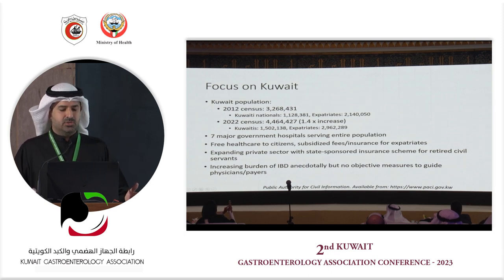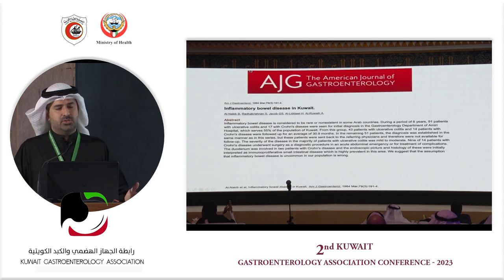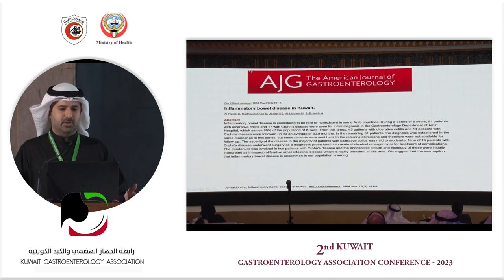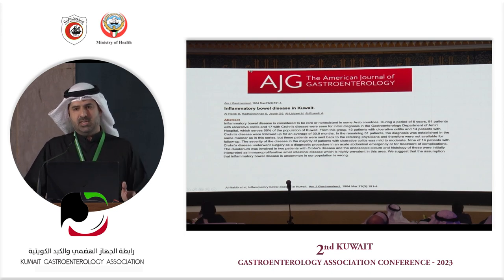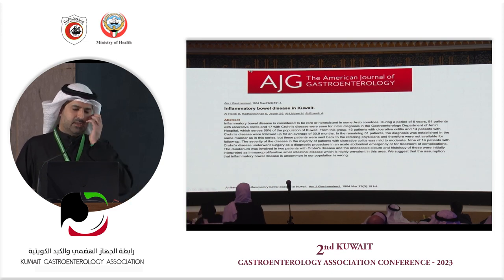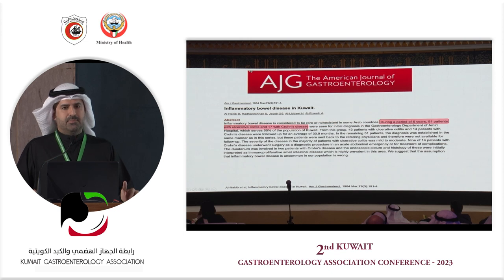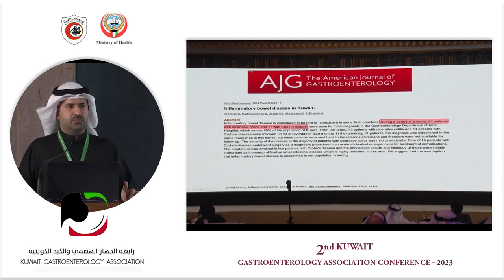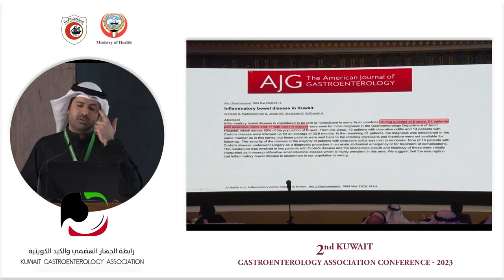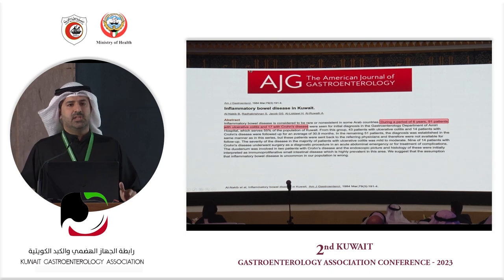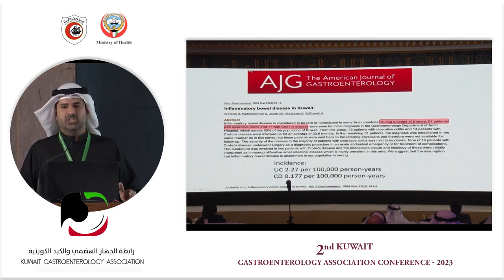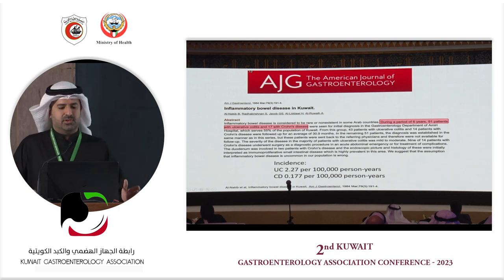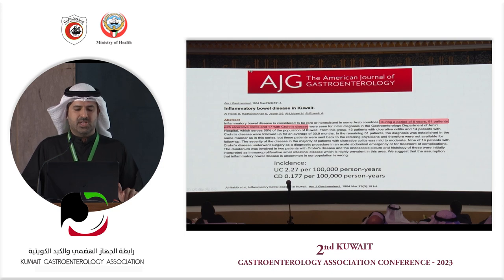Looking at published IBD data in Kuwait from earliest to most recent: the first publication appeared in the 1980s by Professor Naqib's team from the Amiri Hospital, the major hospital at that time. Over six years, 91 patients were diagnosed with ulcerative colitis and 17 with Crohn's disease, giving incidence rates of approximately 2.27 per 100,000 person-years for UC and 0.177 for Crohn's — pretty low incidence rates at that time.